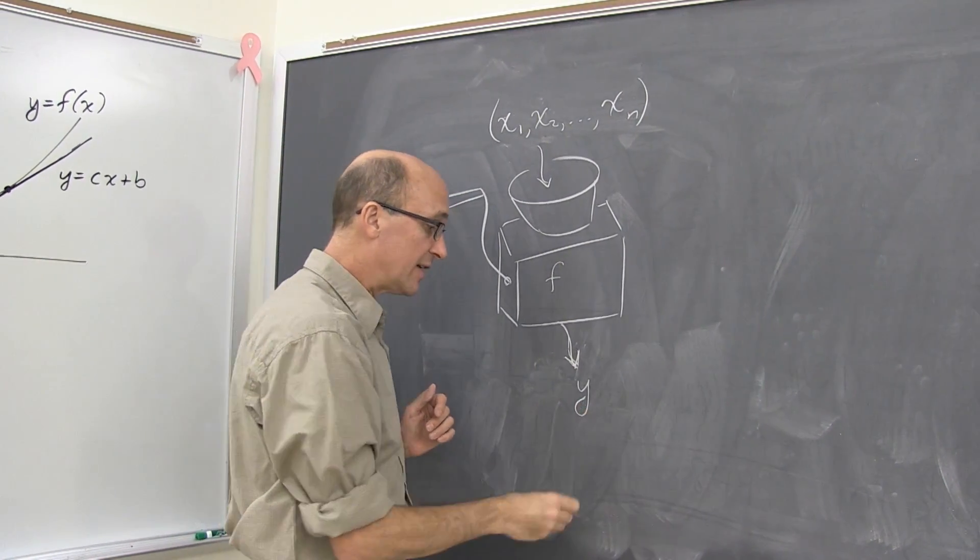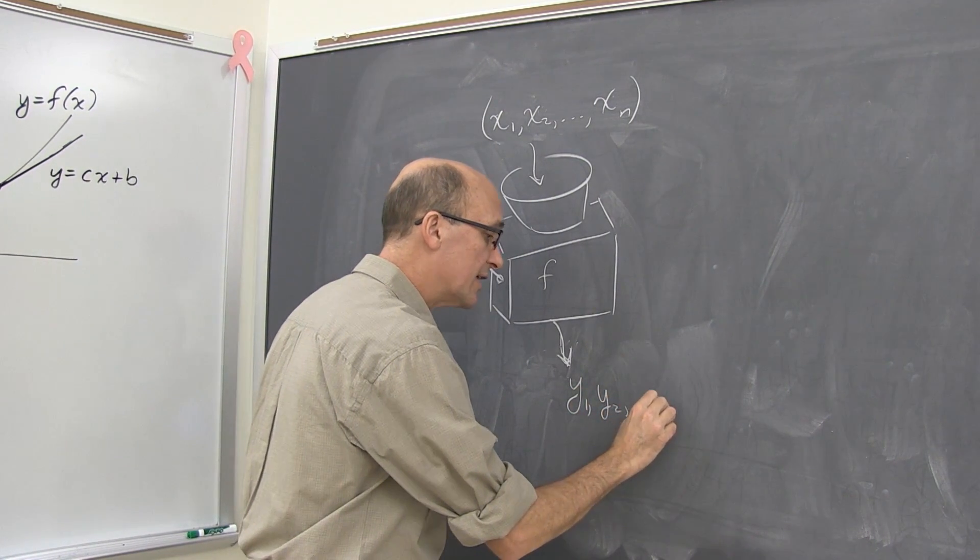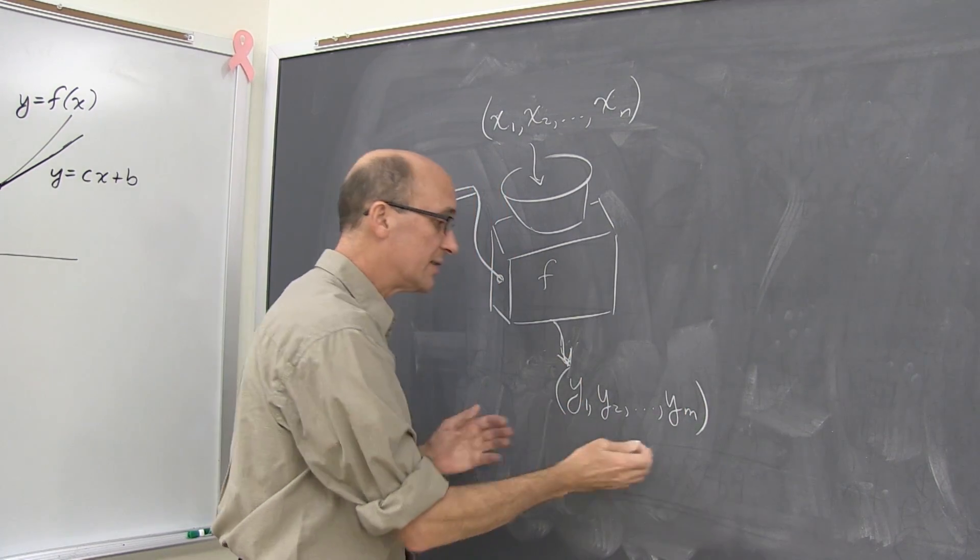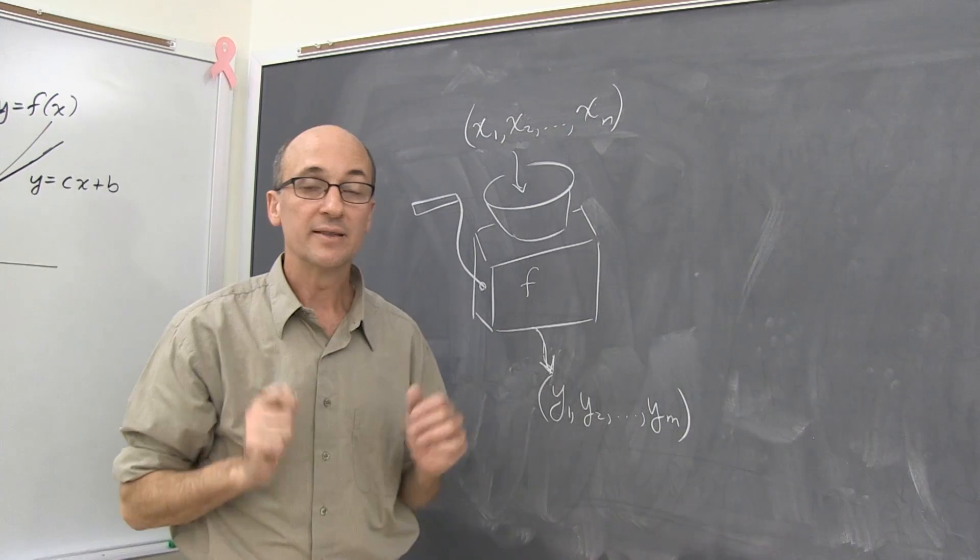Similarly, the output variable y now becomes a list, y1, y2, a number of output variables m, and we bundle the m output y variables into a single object called the output vector.